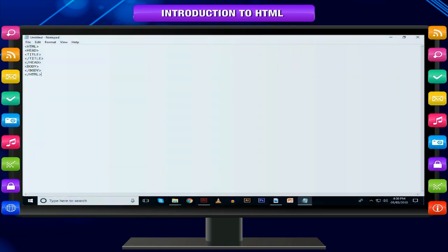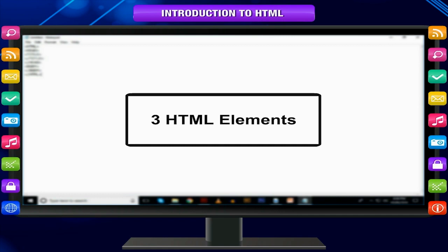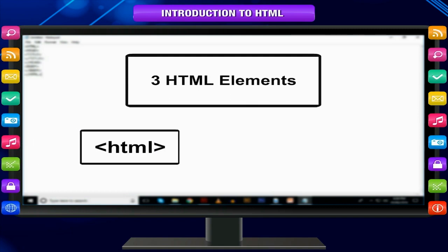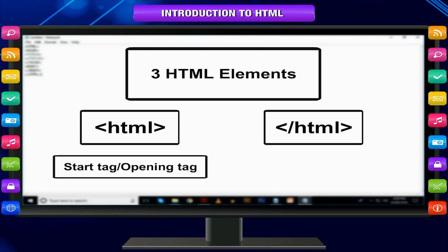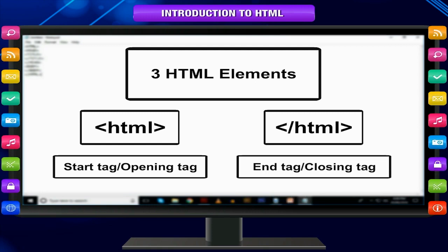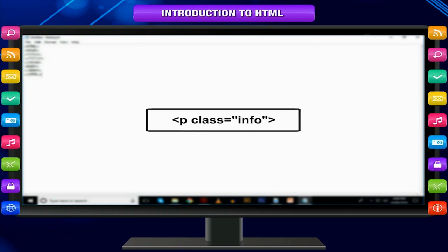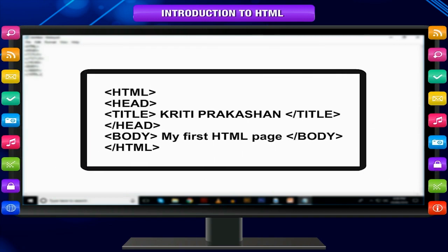HTML elements. All HTML documents are made up of HTML elements that have three components: a pair of tags enclosed in angle brackets like <html> and </html>; notice the difference between the two tags — the first tag is called the start tag or opening tag and the second is called the end tag or closing tag; some attributes within the start tag; and any textual and graphical content between the start and end tags, which can also include other nested elements.